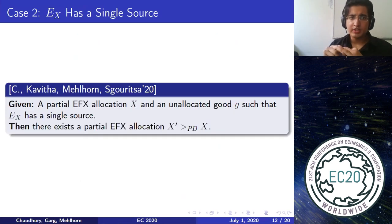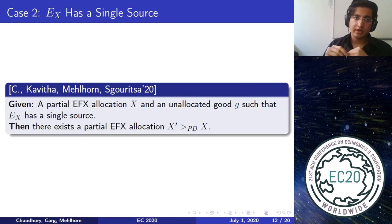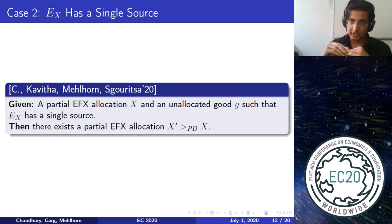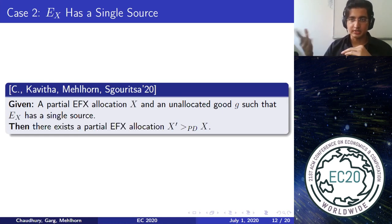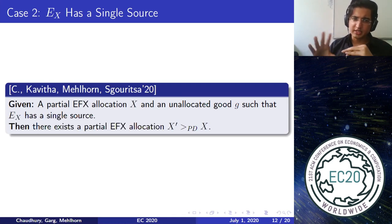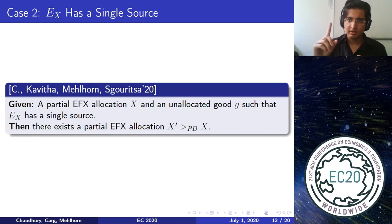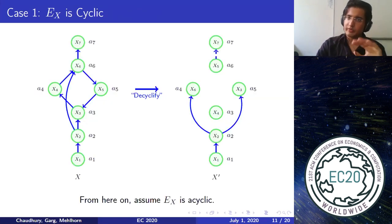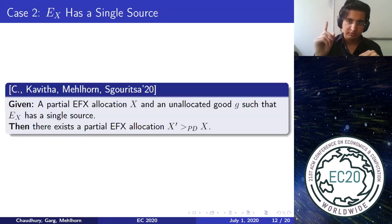Similarly, there is a prior result — SODA 2020 — showing that if the envy graph has a single source and there is an unallocated good G, we can also obtain a partial EFX allocation that Pareto dominates the existing one. This is done without significantly disrupting existing bundles — essentially we break up exactly one bundle.